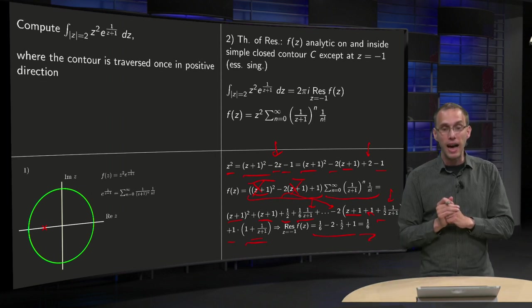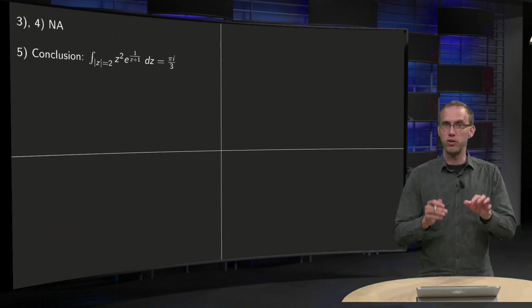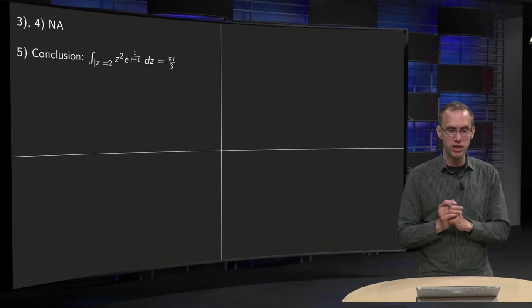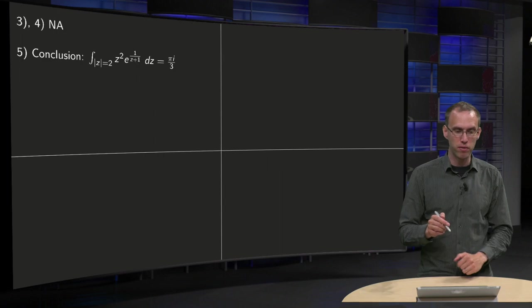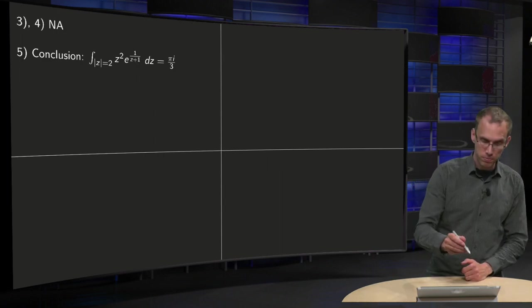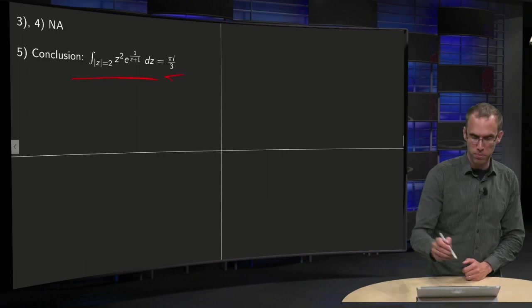There we have the residue, end of the second step. In the third and fourth step in contour integrals, we are doing ML estimates or we are parametrizing, we don't need that in this case, so we can immediately skip over to the last step to our conclusion. Our integral will be 2 pi i times 1 over 6, so pi i over 3.